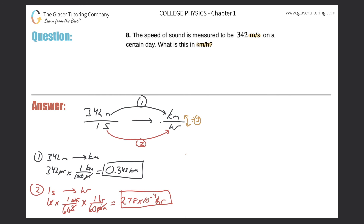Step three: take the answer from step one, 0.342 kilometers, and divide it by 2.78 times 10 to the minus 4 hours. Plugging that into the calculator and rounding slightly, we get 1.23 times 10 to the third kilometers per hour, and that is the final answer.